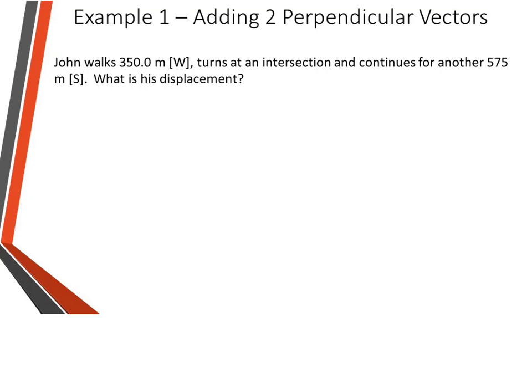So let's look at this first example. John walks 350 meters west, turns at an intersection, and continues another 575 meters south. What is his displacement?